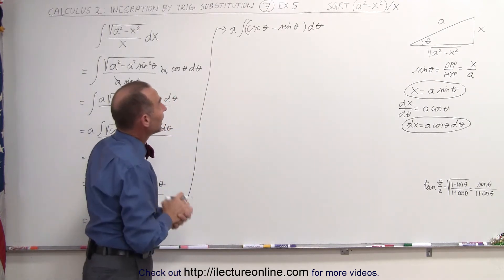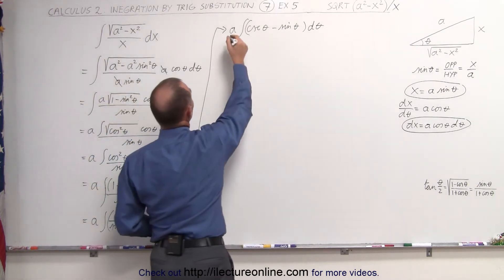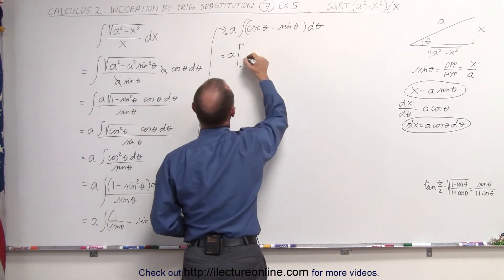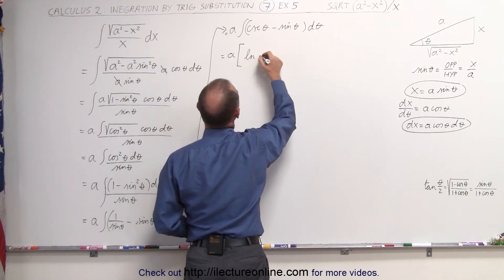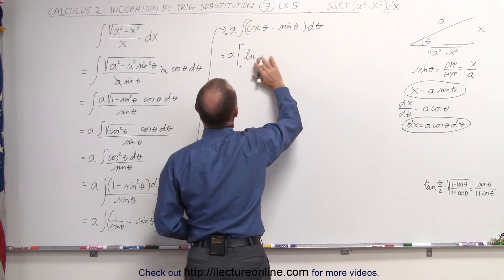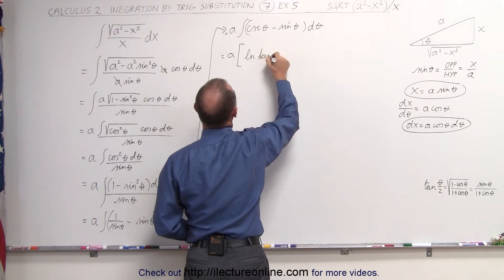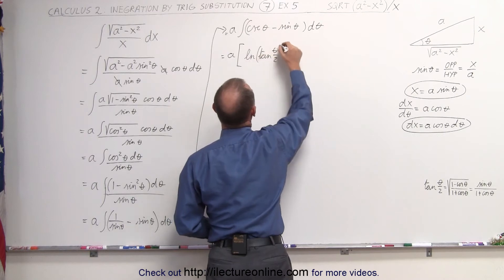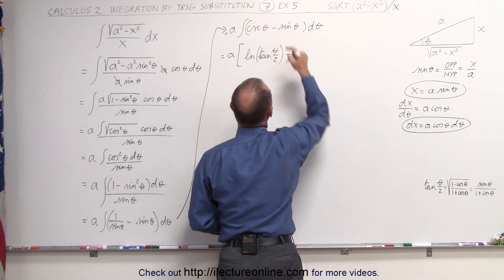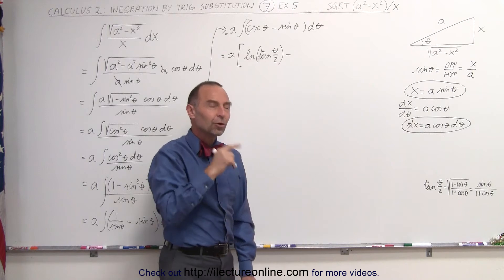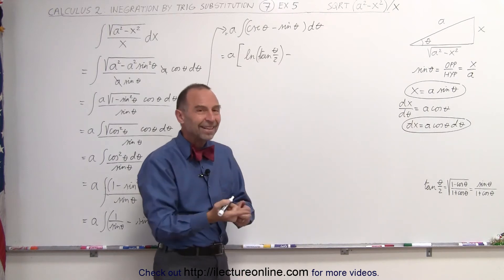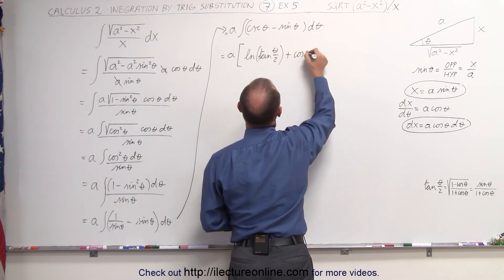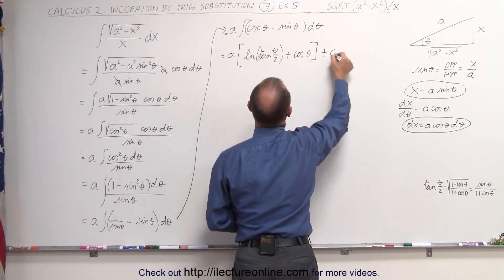Of course, we do need to know what the integral of the cosecant of theta is. This is equal to a times: the integral of the cosecant of theta is the natural log of the tangent of half-theta — and that's where we need the identity mentioned earlier. Minus the integral of the sine: the derivative of the sine is the cosine, so the integral of the sine is the negative cosine, and negative times negative makes it plus the cosine of theta, plus a constant of integration.